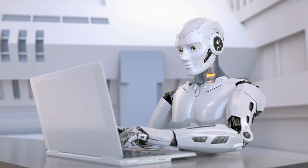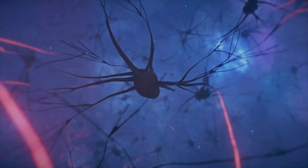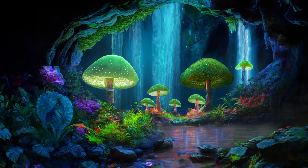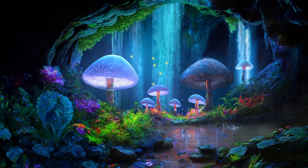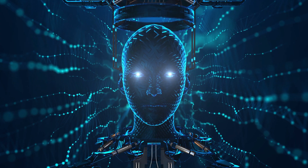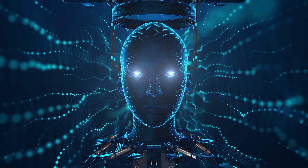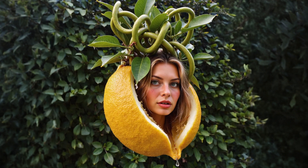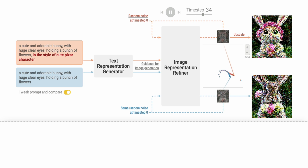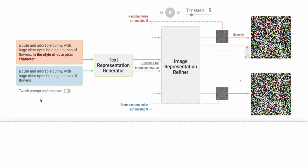Imagine a world where you can describe any image in words, and within seconds, a computer creates that exact picture for you. Sounds like magic, right? Well, that's exactly what Stable Diffusion does. It's like having an artist inside your computer who can paint anything you describe. Let's dive into how this amazing technology works.